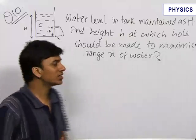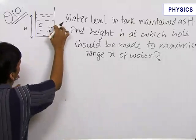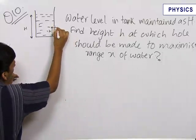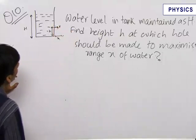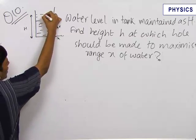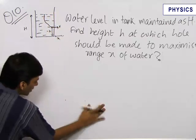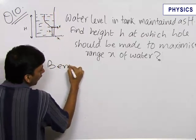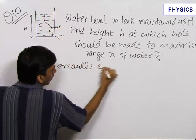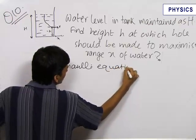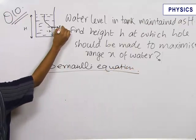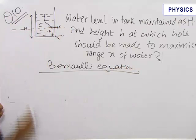To find this, let us first find the velocity V of water coming out through this hole. We apply Bernoulli's equation on a streamline of water. Bernoulli's equation is always applied on a streamline. When we apply Bernoulli's equation, let the reference level be this one for simplicity.